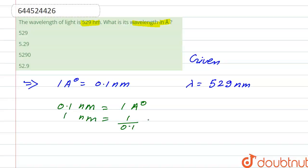So 529 nanometer is equal to 529 into 10, that is 5290 angstrom. Coming toward our options, it is option third, so our correct option is option third.